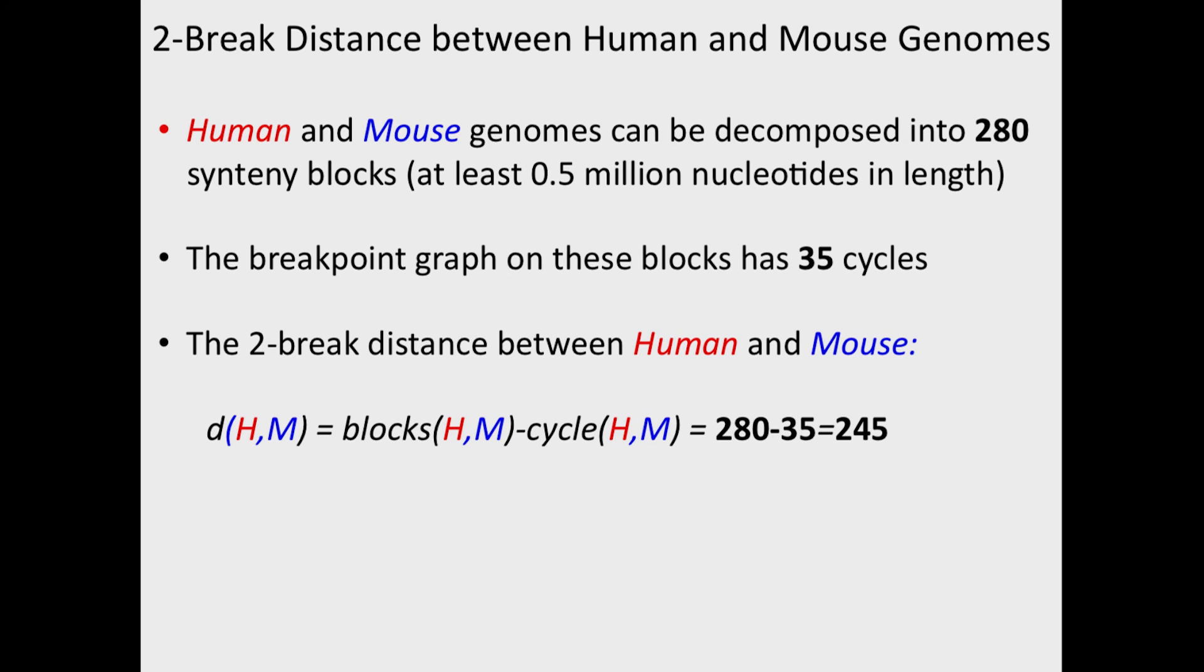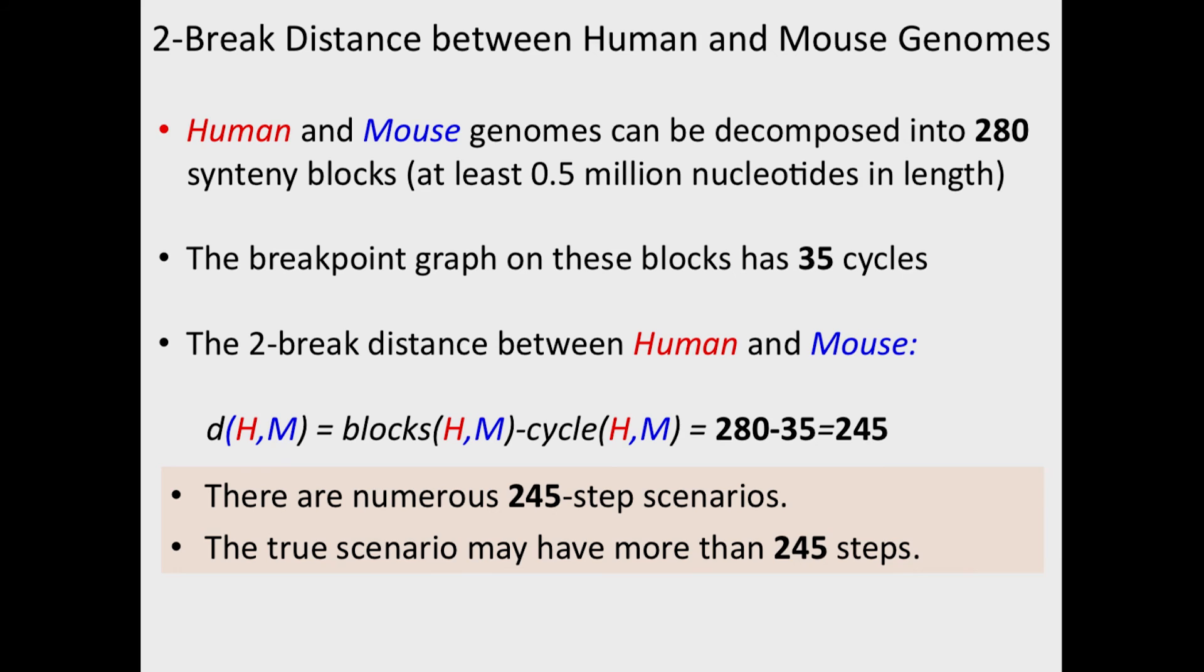actually contains 35 cycles. And therefore, the two-break distance between human and mouse equals 245. Remember this number because it will be important in the next section. Now, there are numerous 245 step scenarios, and we do not claim that we know which one of them is correct. Moreover, the true scenario may have more than 245 steps.